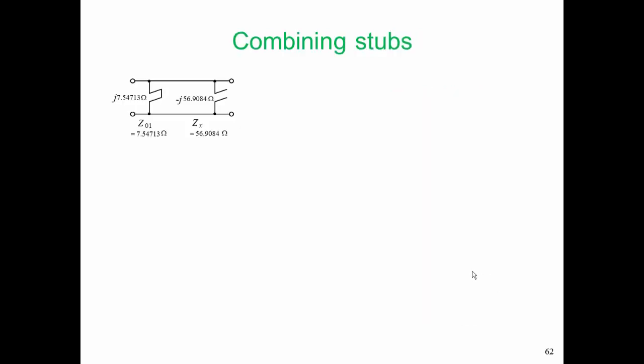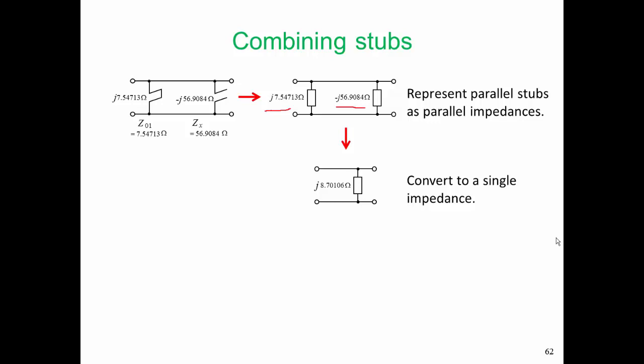Here are the two stubs again, just highlighted and brought out of the circuit. Now to go through the process of combining the stubs, we convert these stubs to impedances. So we have a positive reactance in parallel with a negative reactance. We can combine those impedances. We add their admittances together. So we convert the parallel stubs into a single impedance, and then we convert back to stub form.